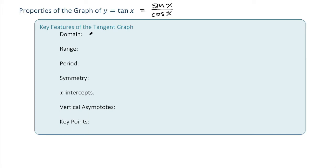will not be defined if cosine is 0. So the domain is the set of all x values as long as x is not equal to pi over 2 plus any multiple of pi.